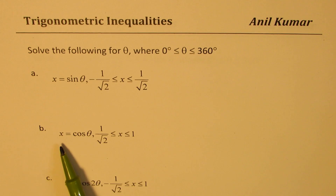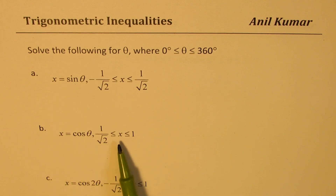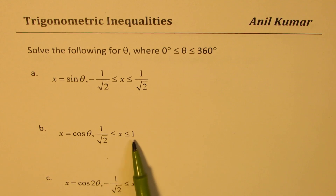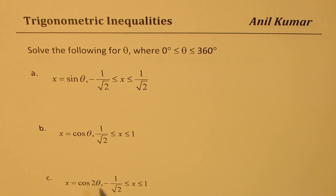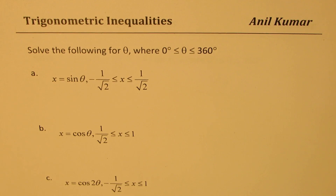Then we'll look at Part B: x equals cos theta, where x is between 1 over square root 2 and 1, both included. Part C is a practice question for you — x equals cos 2 theta, meaning two waves in this duration. We want x to be greater than or equal to minus 1 over square root 2 and less than 1.